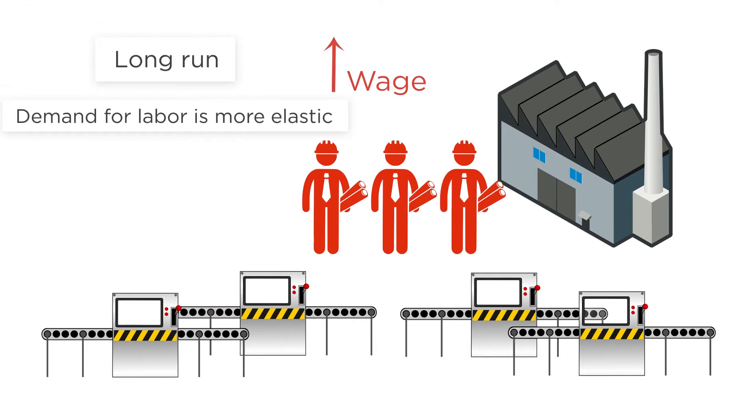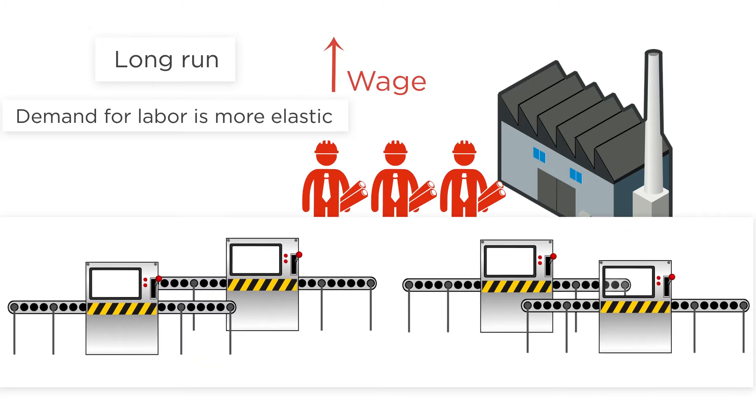This is because in the long run, there's a substitute that's available that's not available in the short run: more machines. This is an example of a general rule in economics. The more things that can adjust, the more elastic the adjustment will be.